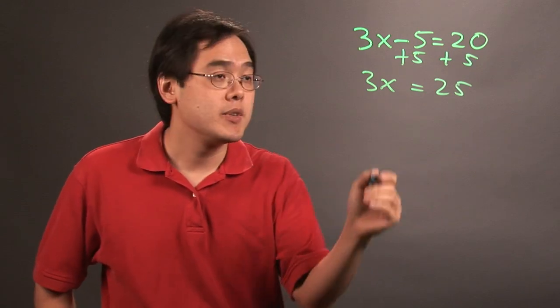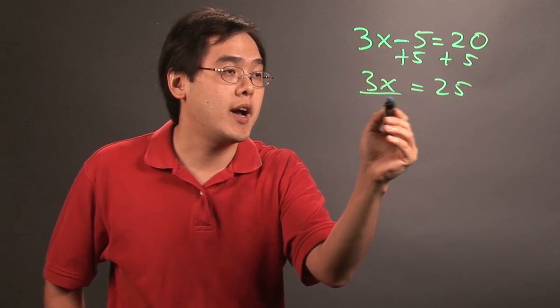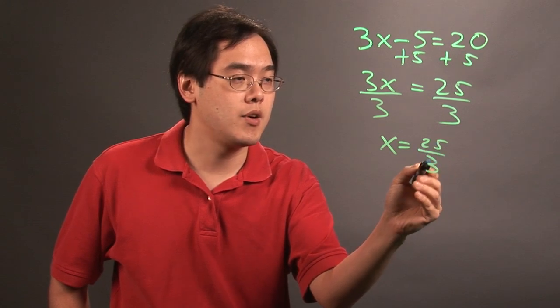The second step is simply to solve for x. Since the number three is multiplied by the x, you want to divide both sides by three, and so x is going to be 25 thirds.